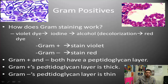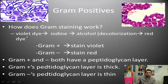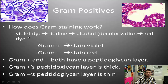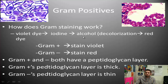How does gram staining work? First, you fix the bacteria onto a slide, then dye them with a violet dye. Wherever there's an arrow in the procedure, we rinse with water. We rinse, then add gram's iodine, rinse again, add ethanol for decolorization, rinse again, and finally add a red dye.